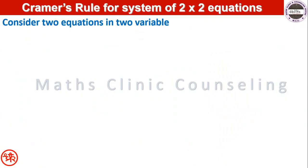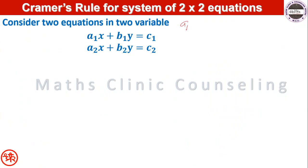Consider two equations in two variables. The first equation: a1x plus b1y equal to c1. The second equation: a2x plus b2y equal to c2. Here a1, a2 are the coefficients of x, and b1, b2 are the coefficients of y.